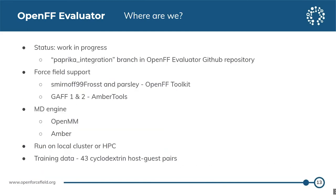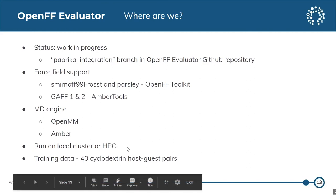As mentioned at the start of the presentation, this is still a work in progress. It is available on the GitHub repository of Evaluator under the Paprika integration branch. Most of the workflow is implemented; we just have a few minor bugs and glitches to fix. Right now, the Smirnoff and Parsley force fields are supported through the OpenFF toolkit. We also have support for GAFF 1 and 2 through Amber tools. By default, the simulation will use OpenMM, but we also have the option to run it on Amber. We can run it on a local cluster or on HPC, and our dataset is currently limited to the 43 host-guest pairs.